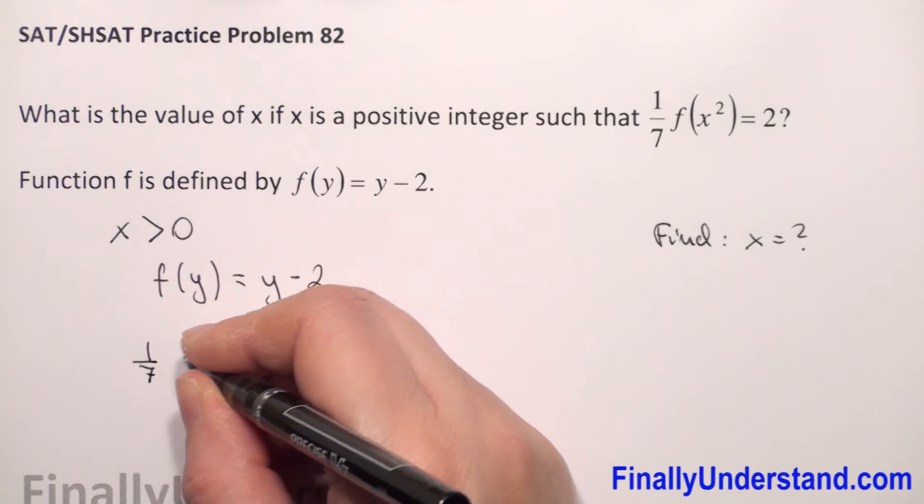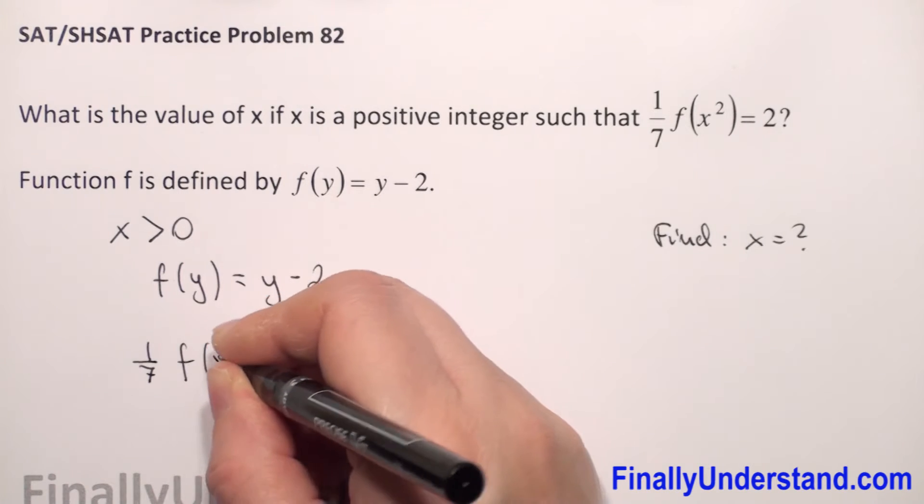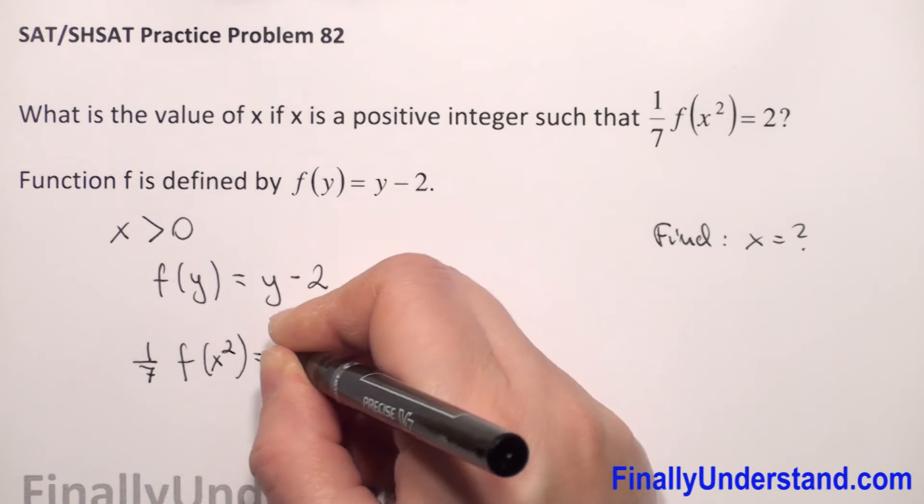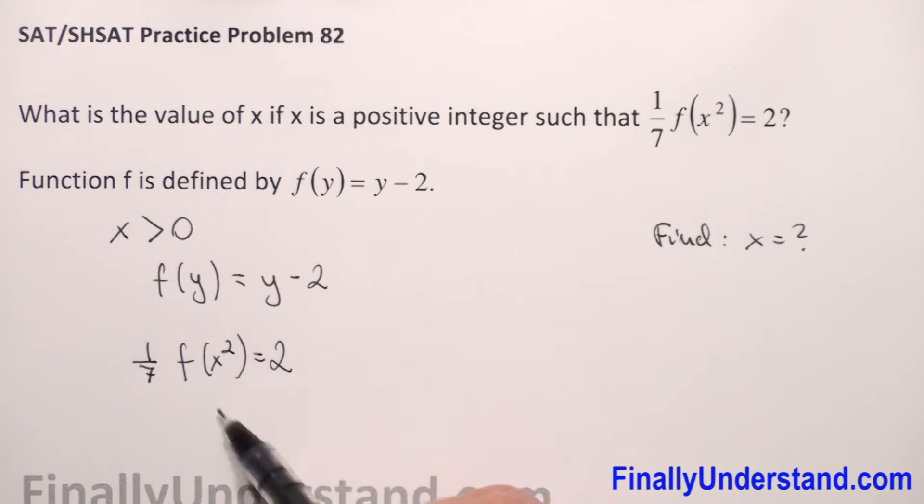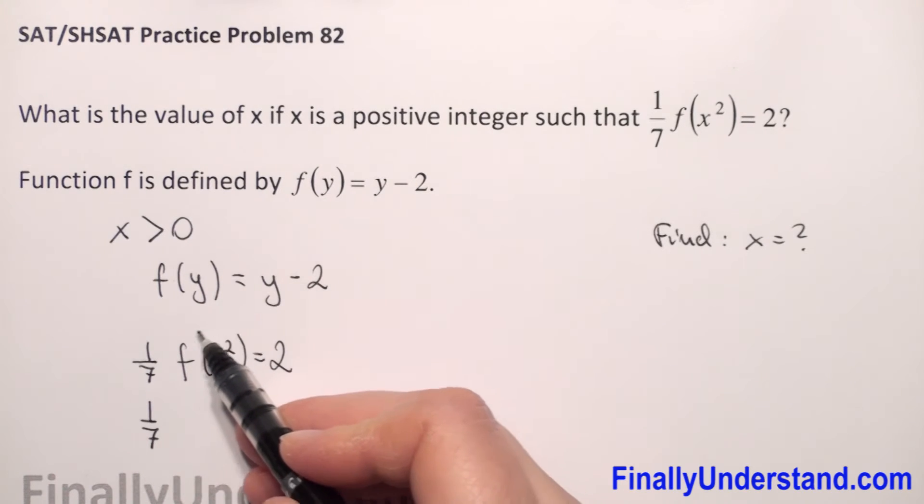We have 1 over 7 times f of x squared equals 2. We have given this equation with function f. Our unknown is x. What we can do here? We have to first copy 1 over 7 and we have f of x squared. We need to find value of our function for x squared.